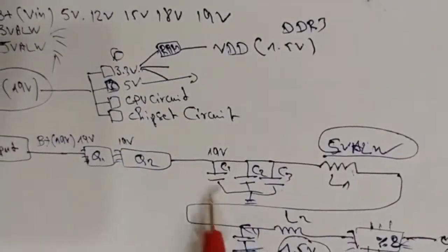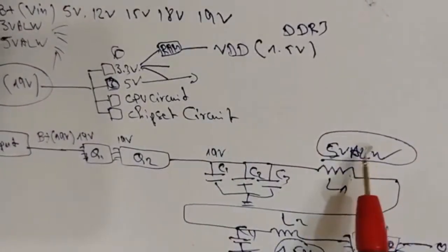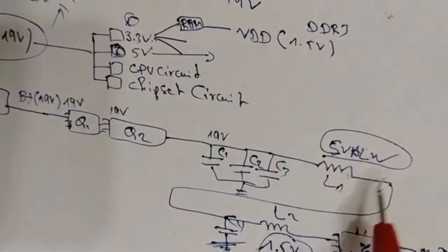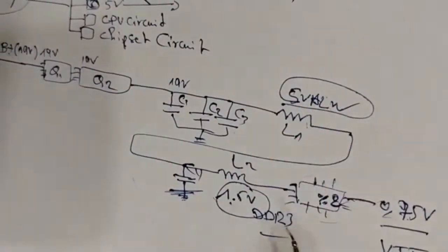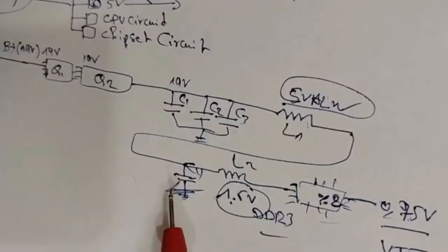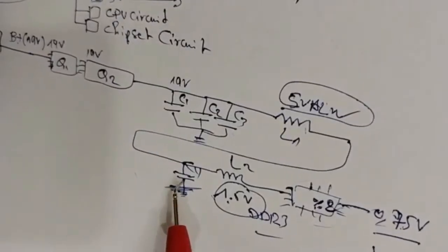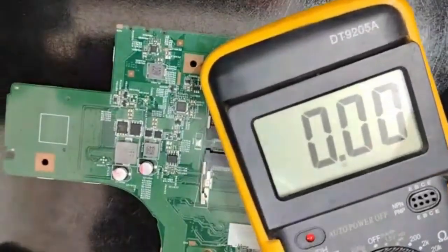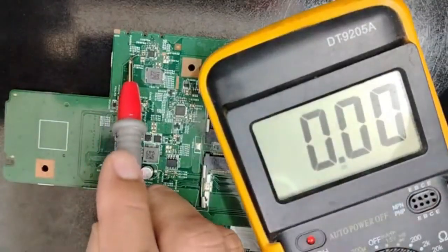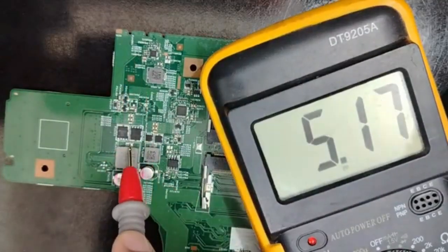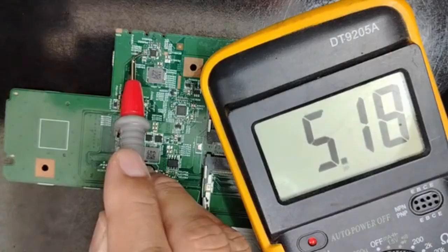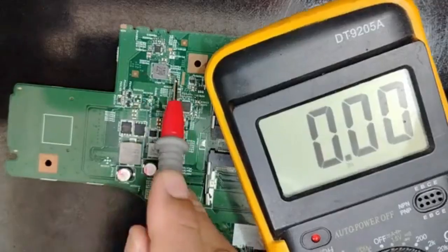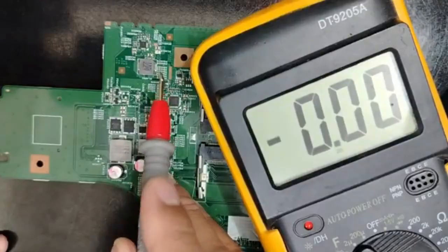So we have two MOSFETs, three ceramic capacitors, and the inductor where we get 5 volts. The 5 volts from the inductor is what generates 5 volts, and this 5 volts will be the source of 1.5 volts. We will find 1.5 volts in the capacitor next to this inductor. Let's check — we have 5 volts here, 5 volts passing to the side.